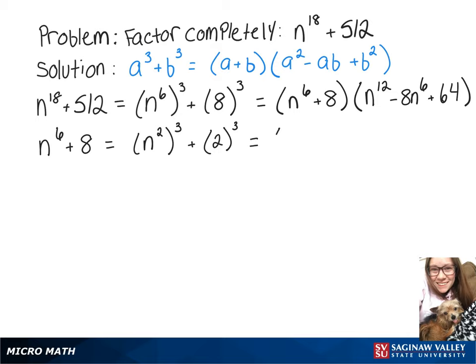And then that is now going to turn into n squared plus 2 times n squared squared, which is n to the 4th, minus 2n squared plus 4.